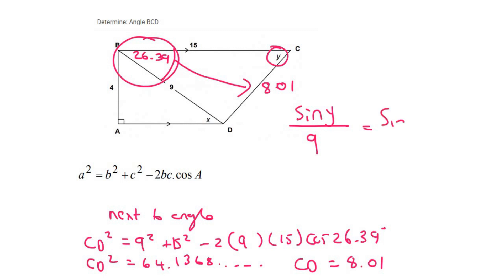Should be the same as the sin of 26.39 over 8.01. You could then multiply the 9 across, but then don't round off, and then say shift sin. And your final answer for angle y would be 29.96 degrees.